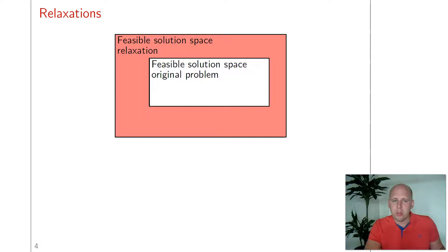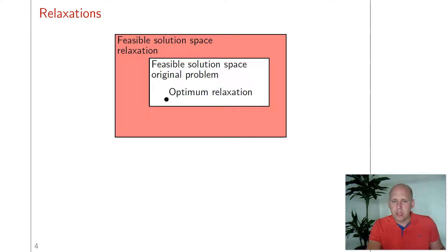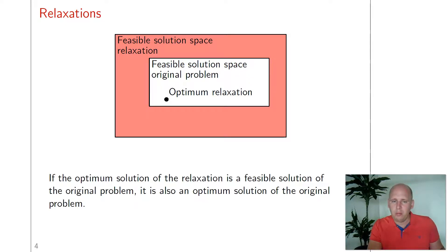There are two situations possible. The optimal solution of the relaxation can also be feasible for the original problem. This is the optimal solution of the relaxation — across the entire feasible solution space there is no better solution. That means there is also no better solution if we only consider the feasible solution space of the original problem. So the optimal solution of the relaxation is also the optimal solution for the original problem in this case.